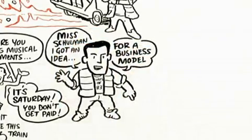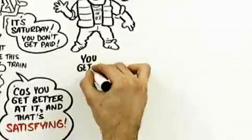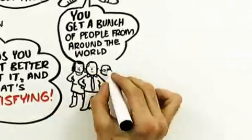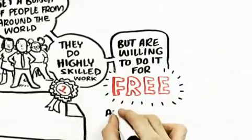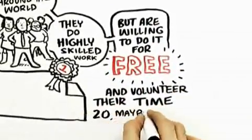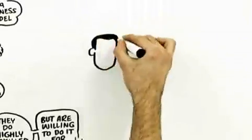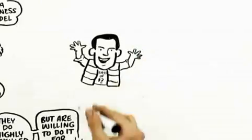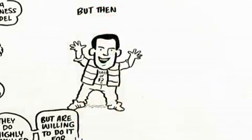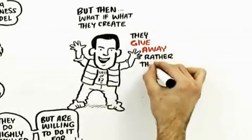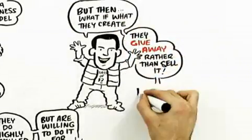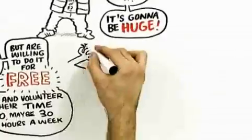Here's how it would work: you get a bunch of people around the world who are doing highly skilled work, but they're willing to do it for free and volunteer their time, 20 sometimes 30 hours a week. She's looking at you somewhat skeptically. Oh, but I'm not done - and then what they create, they give it away rather than sell it. It's going to be huge. She truly would have thought I was insane. It seemed to fly in the face of so many things.